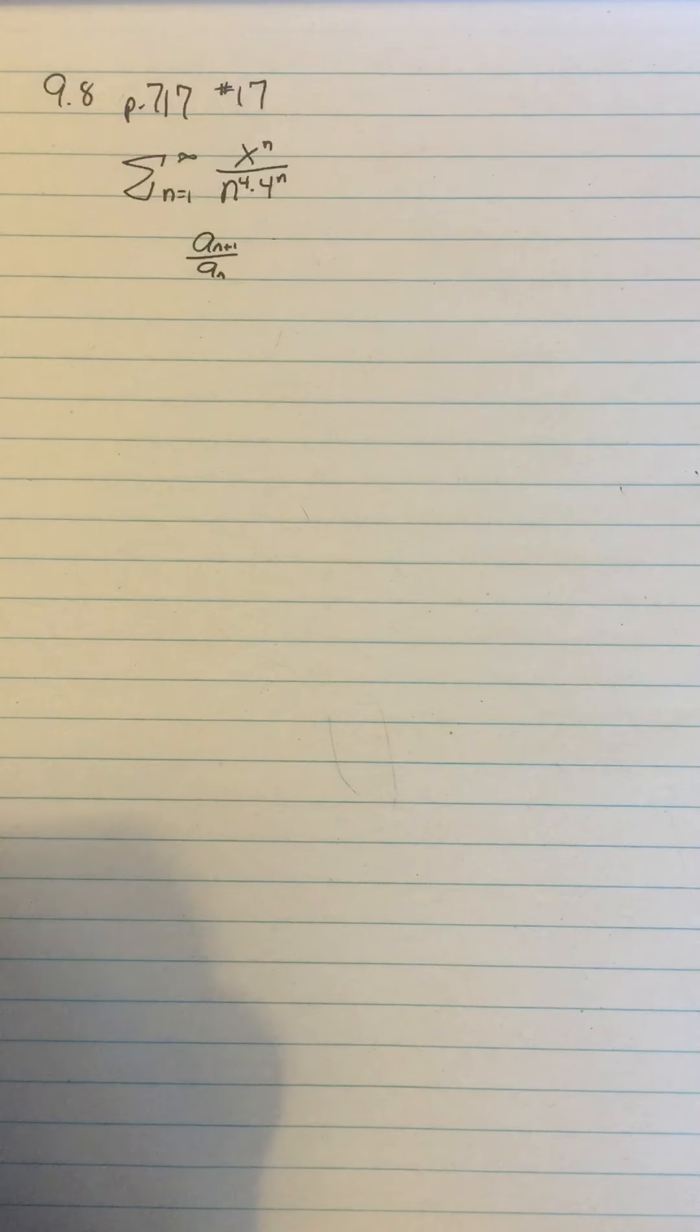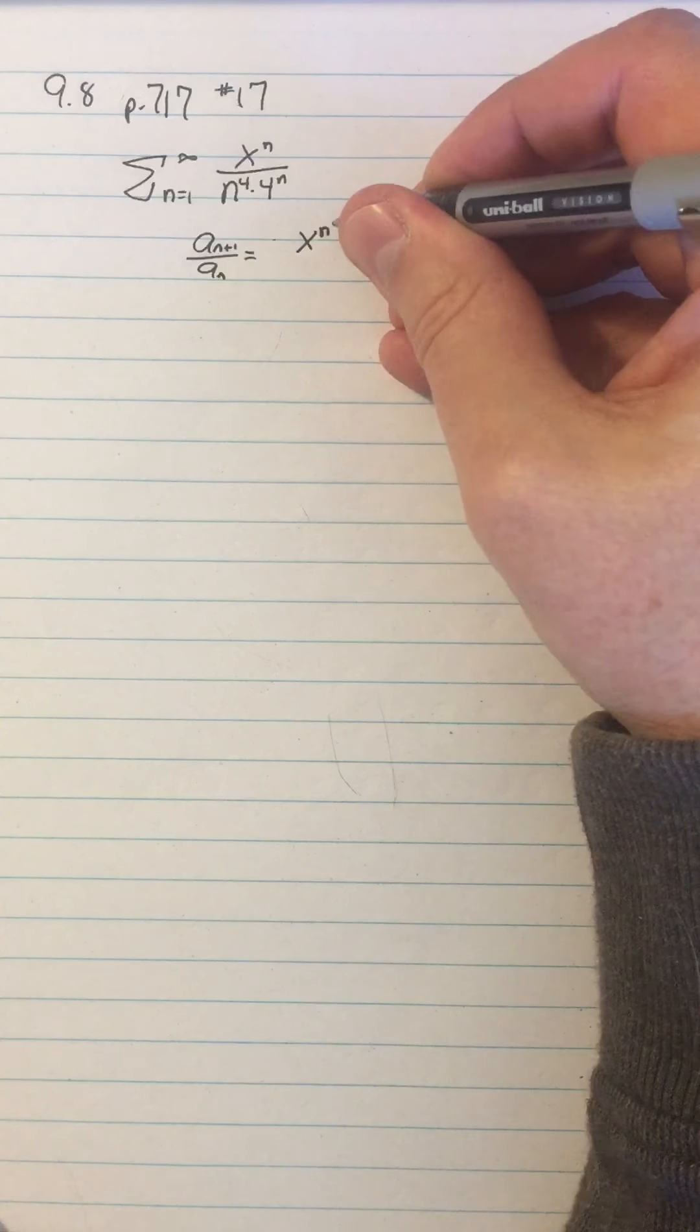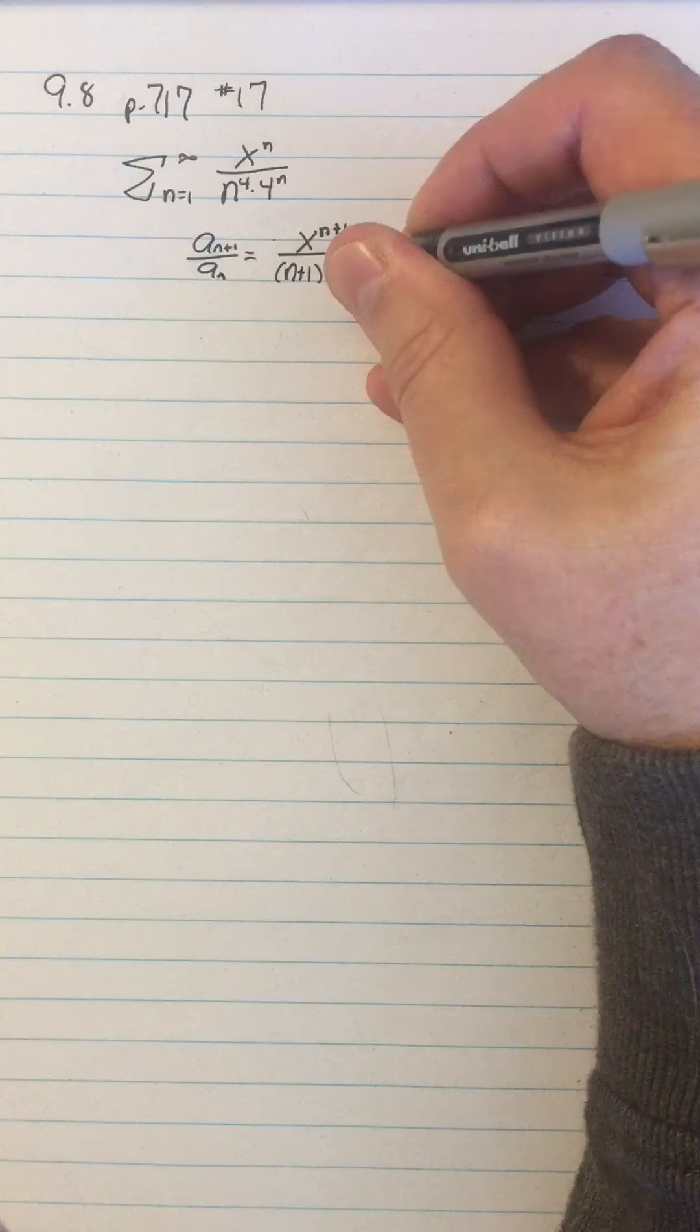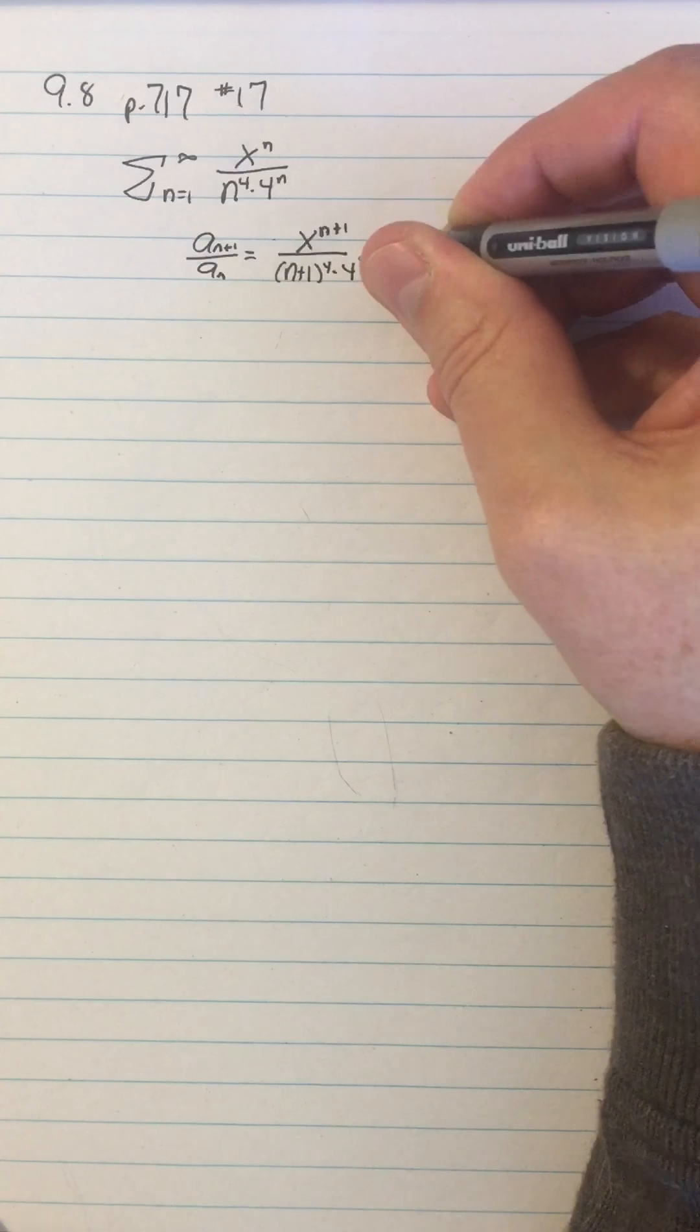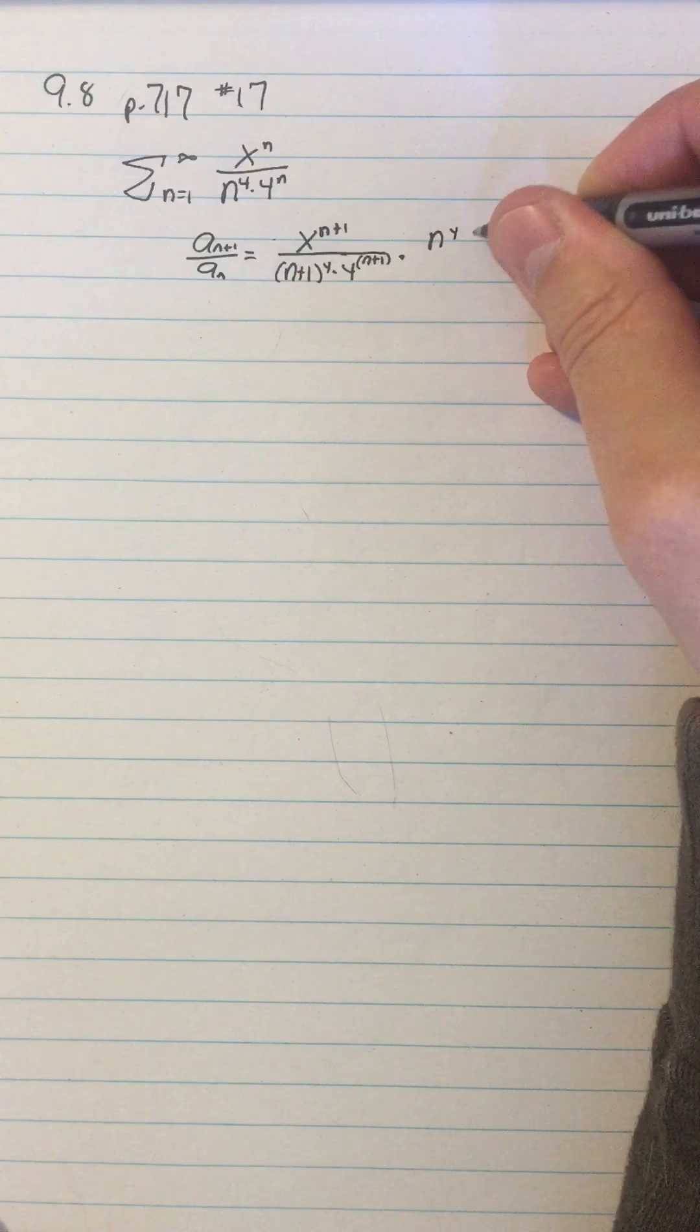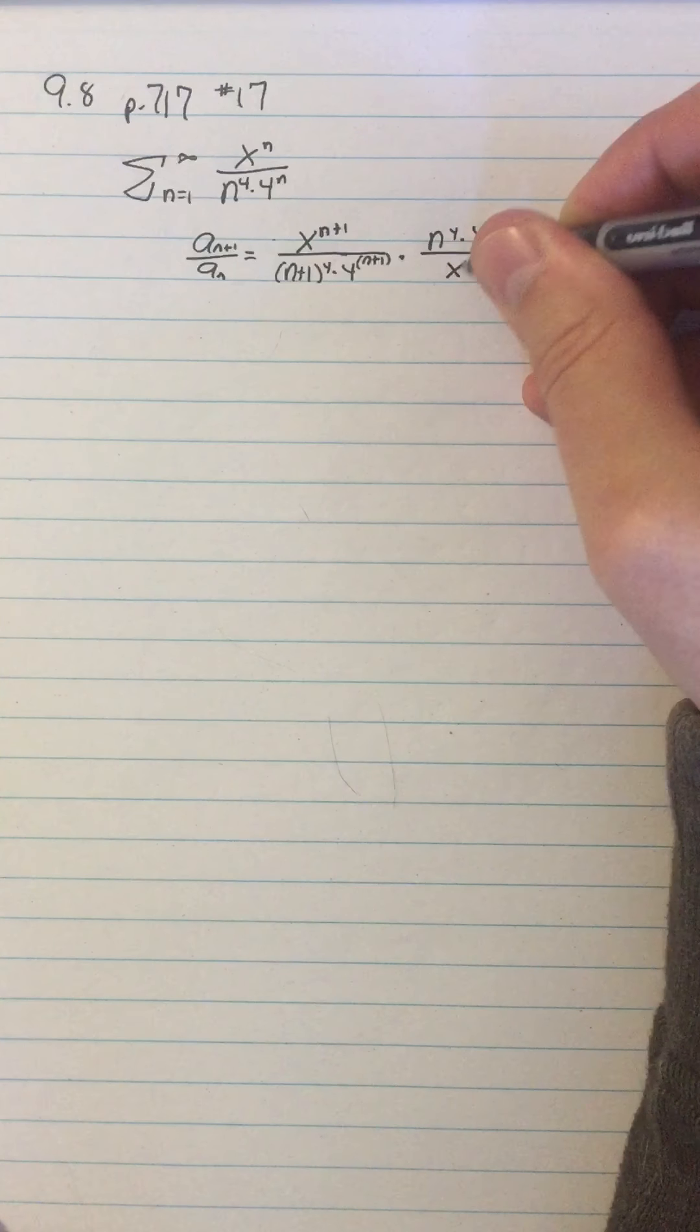We look at the ratio test, and so for this sequence, a sub n plus 1 over a sub n is going to be x to the n plus 1 over (n+1) to the fourth times 4 to the n plus 1, and then times, then I flip that over, we get n to the fourth times 4 to the n over x to the n.